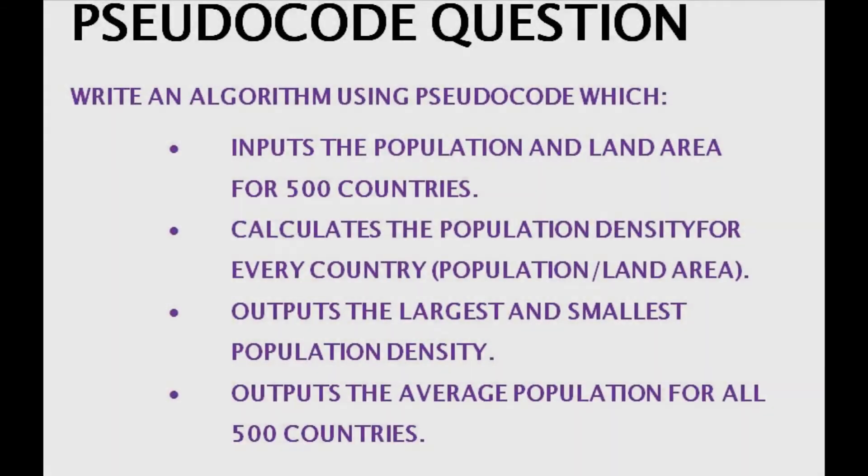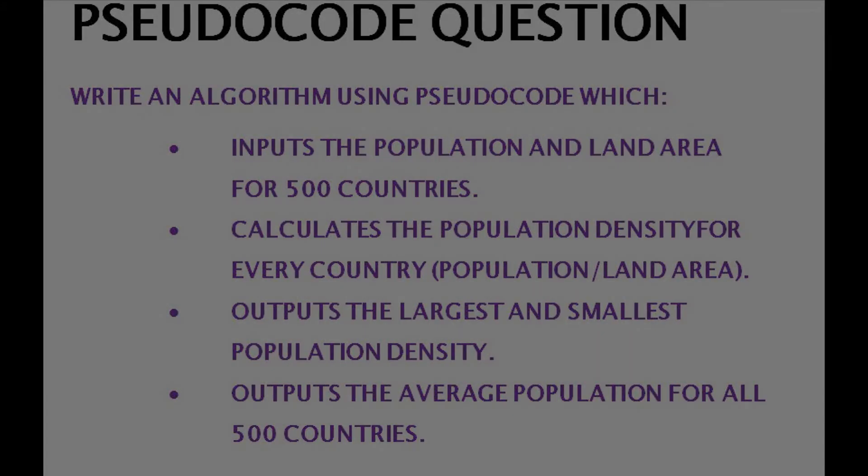Here is a pseudocode question. And this is the hardest question you could get in a test. The question says: Write an algorithm using pseudocode, which inputs the population and land area for 500 countries. Calculates the population density for every country, population divided by land area. Outputs the largest and smallest population density. And outputs the average population for all 500 countries.